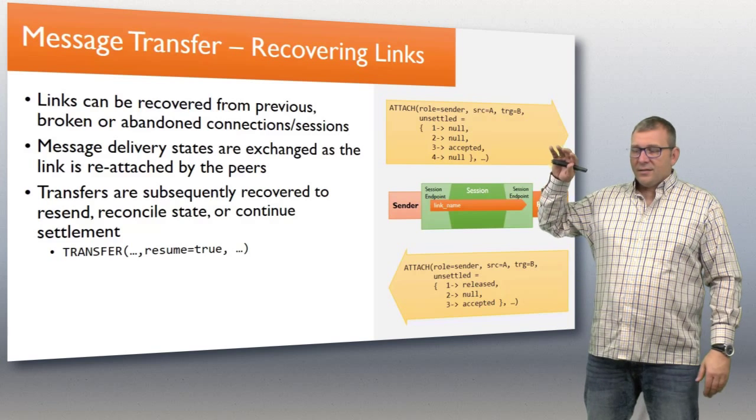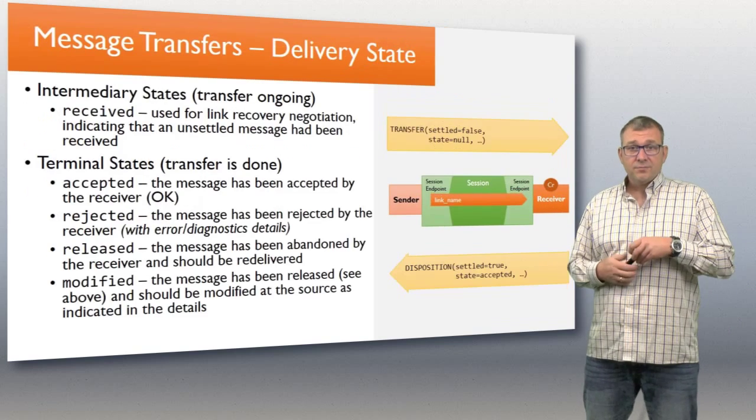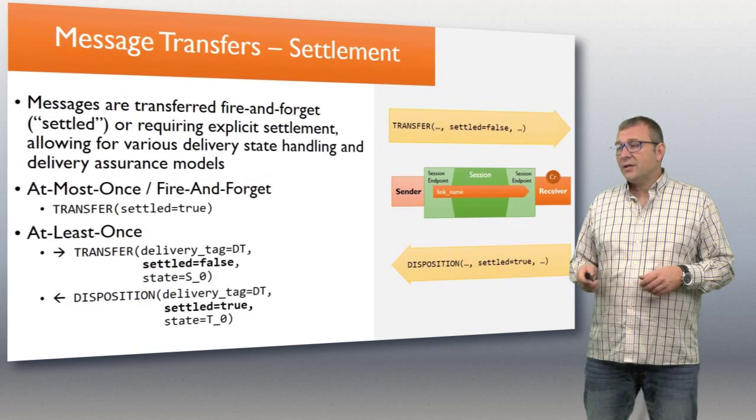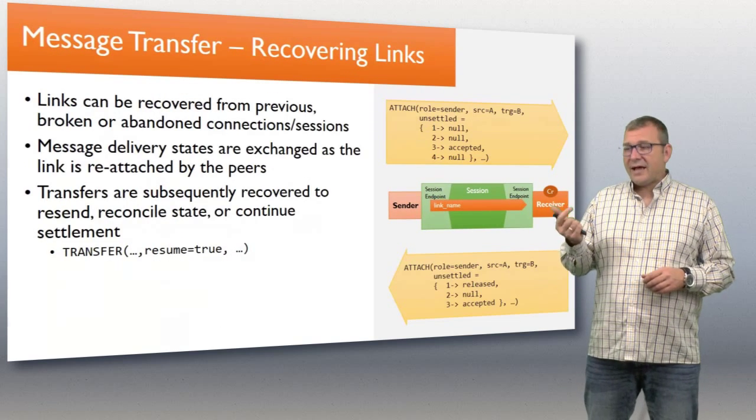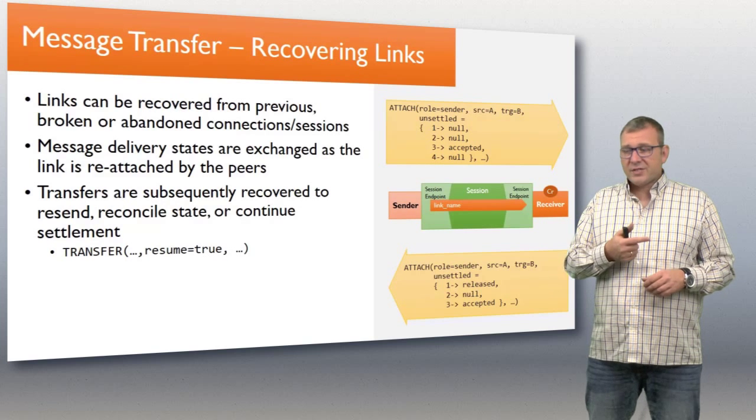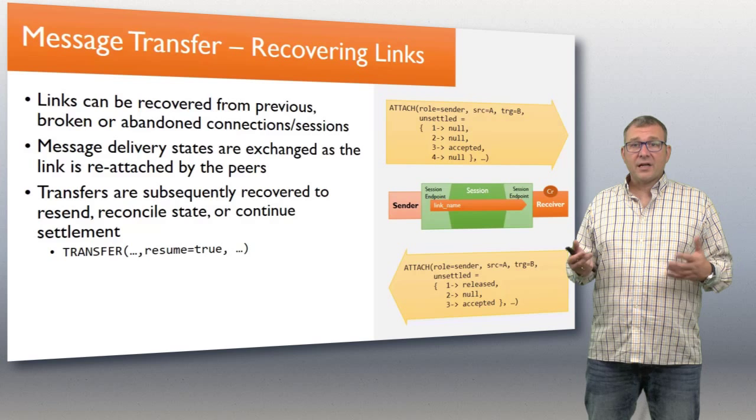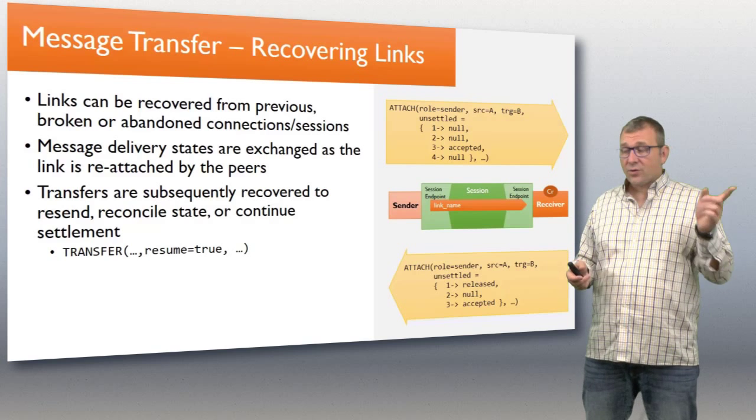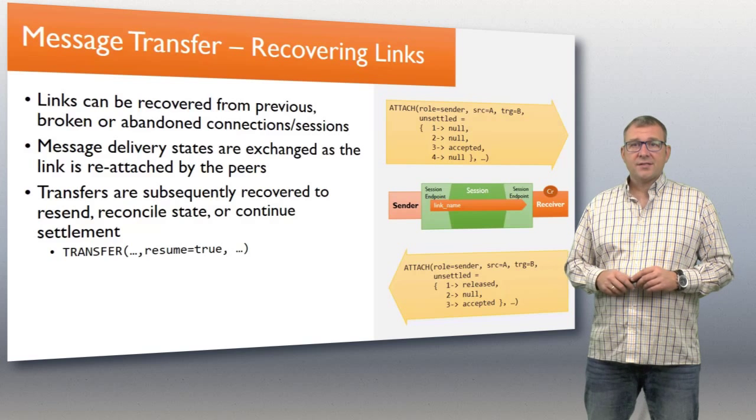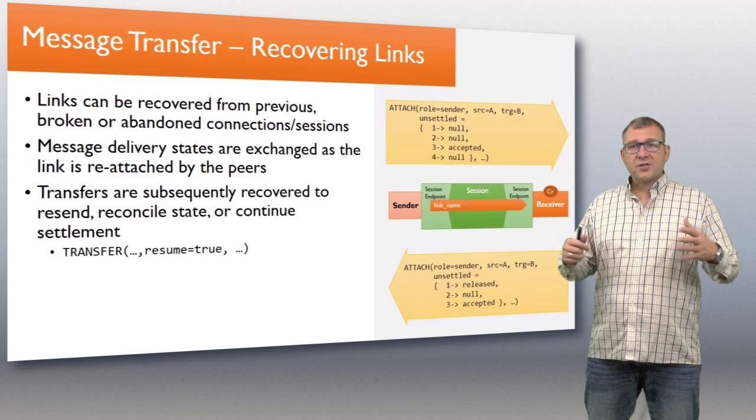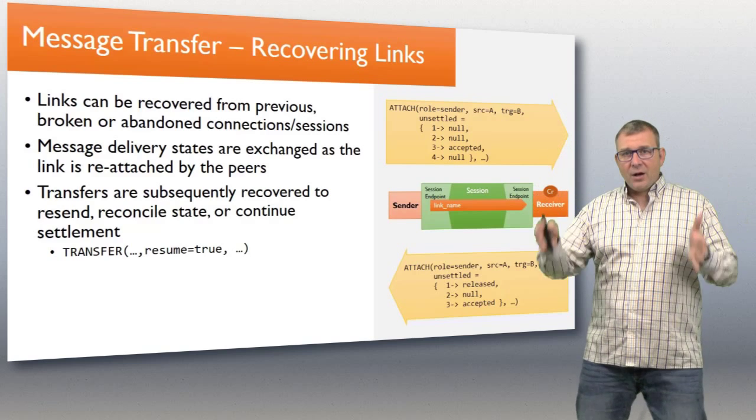Then the receiver comes back and says, yes, I want to reestablish that link. I still know about it. The first one I have released, so you have to send it again. The second one I have no idea about. That may have gotten lost, I have not seen that message at all, so you have to resend that. The third one is indeed accepted, so we can make that message go away.